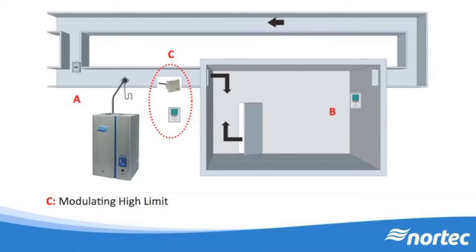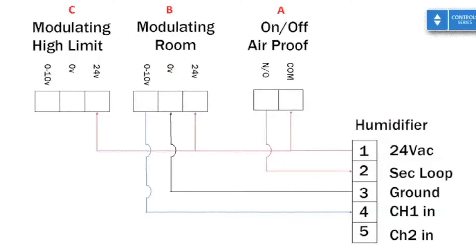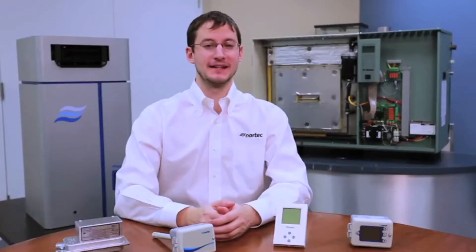Finally, the modulating high limit humidistat also wires to the humidifier's modulating loop. Note that the humidifier has two modulating channels to accommodate this exact scenario. We must wire power and ground to the humidistat. After this, we wire the modulating output, 0 to 10 volts DC, back to the humidifier and land it on channel 2 modulation, typically pin 5. Your wiring is now complete.